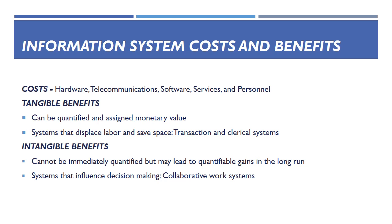Information System Costs and Benefits: Costs include hardware, telecommunication, software, services, and personnel. The tangible benefits can be quantified and assigned monetary value, such as systems that displace labor and save space, like transaction and clerical systems. Intangible benefits cannot be immediately quantified but may lead to quantifiable gains in the long run, such as systems that influence decision-making like collaborative work systems. Transaction and clerical systems that eliminate labor and free up space produce more quantifiable, noticeable benefits compared to management information systems, decision support systems, and computer-supported collaborative work systems.